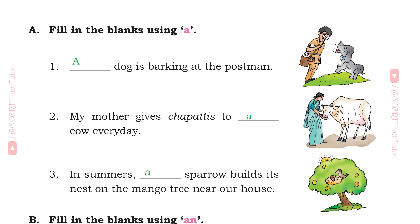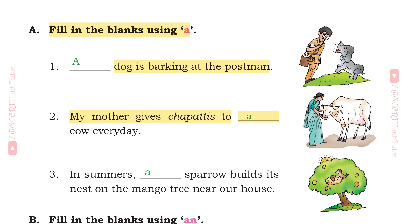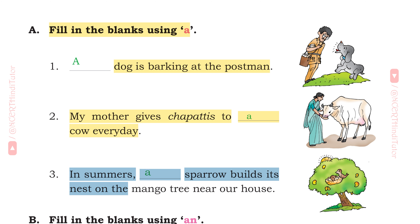A. Fill in the blanks using A. 1st: A dog is barking at the postman. 2nd: My mother gives chapatis to a cow every day. 3rd: In summers, a sparrow builds its nest on the mango tree near our house.